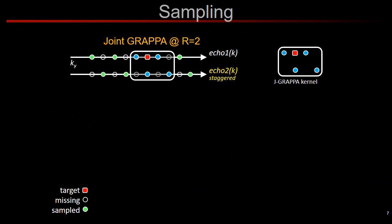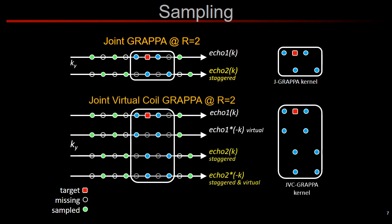In addition to joint reconstruction algorithms, we are also proposing to use complementary k-space sampling patterns across the contrasts. For instance, at two-fold acceleration, we can shift the sampling pattern by one k-space sample in the second contrast to provide complementary frequency coverage in Joint GRAPPA. In JVC-GRAPPA, we also perform k-space interpolation using additional virtual coils, which requires a larger kernel that spans the contrasts as well as the virtual channels.